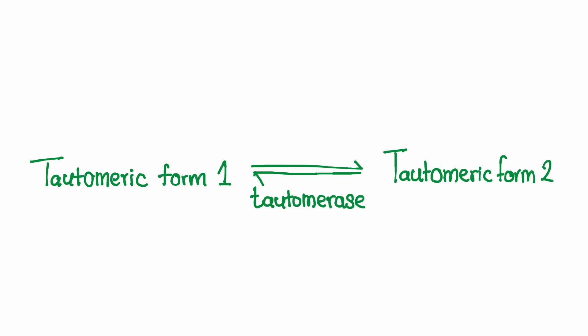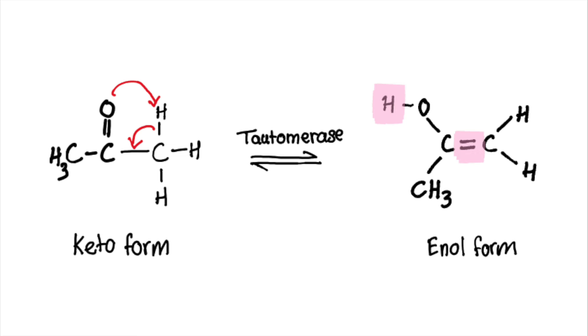Tautomerases are types of isomerase enzymes that catalyze the conversion of one tautomeric form to another. Tautomers are isomers that can interconvert by shifting protons — in other words, hydrogen atoms — and double bonds. Tautomeric shifts are vital in biochemical processes including DNA replication and repair.